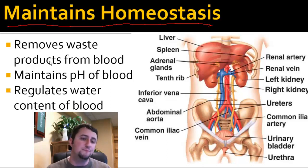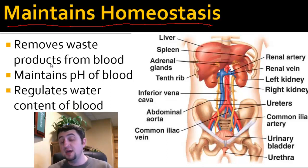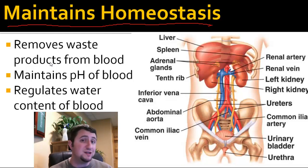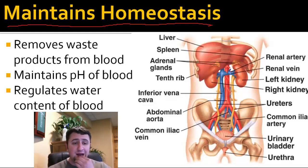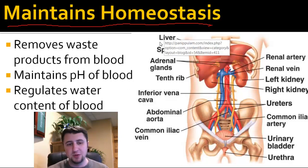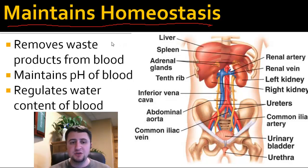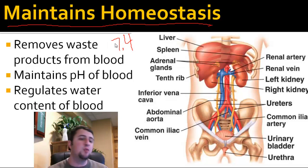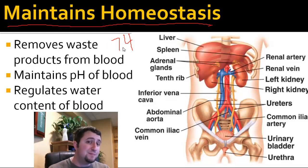Your urine is primarily composed of a lot of waste that your body doesn't want. The excretory system also helps to maintain the pH of blood. The pH of blood is usually around 7.4, so it's slightly basic.